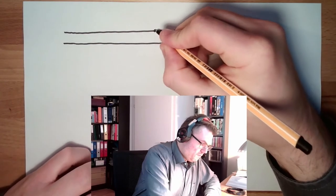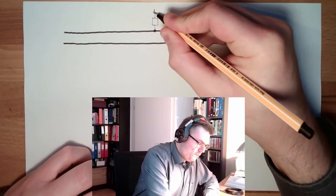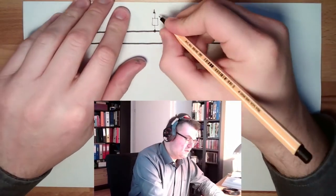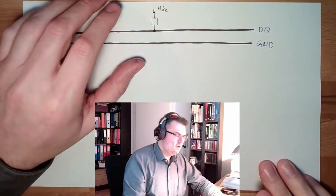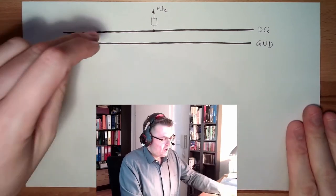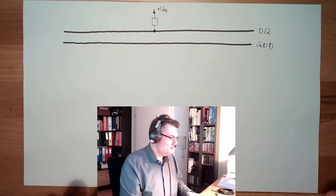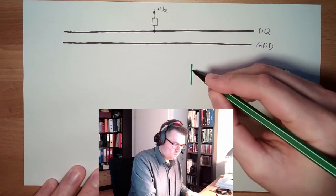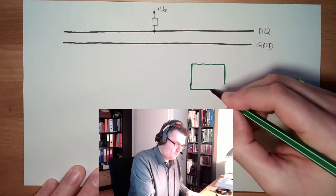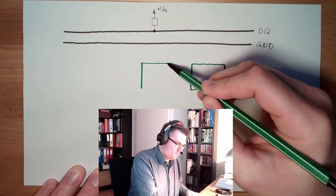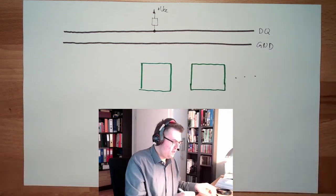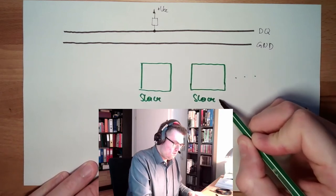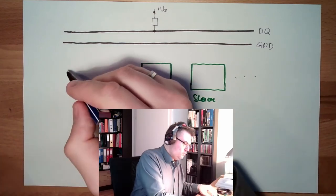This is charged by a pull-up resistor of a reasonable size. Here, there are a small, two kilo or something like this, to a power supply. So if no one on the bus is talking, I have here the power supply ready. And there are the slaves. There are different slaves. Can be different slaves. And there is a master.